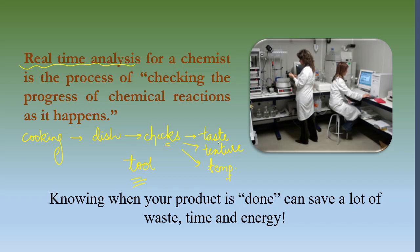If you want to check temperature, you can use an inbuilt thermometer in the reaction. To check pH, you can use a pH paper or a pH meter. Different sophisticated instruments like a conductivity meter can also be used within the process. So the main aim for a chemist is real-time analysis — checking the progress of a chemical reaction as it happens.